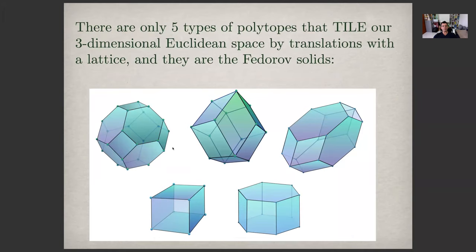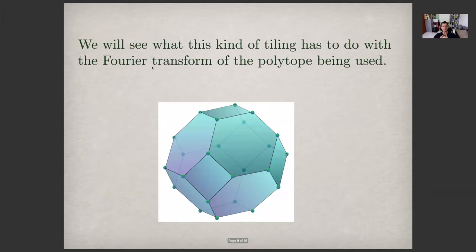Here is an example, well, here's a complete classification of all three-dimensional polytopes that tile three-dimensional Euclidean space by translations only with a lattice. And so these are called Fedorov solids, after Fedorov who classified them in the 1880s, and marked the beginning of crystallography as well.